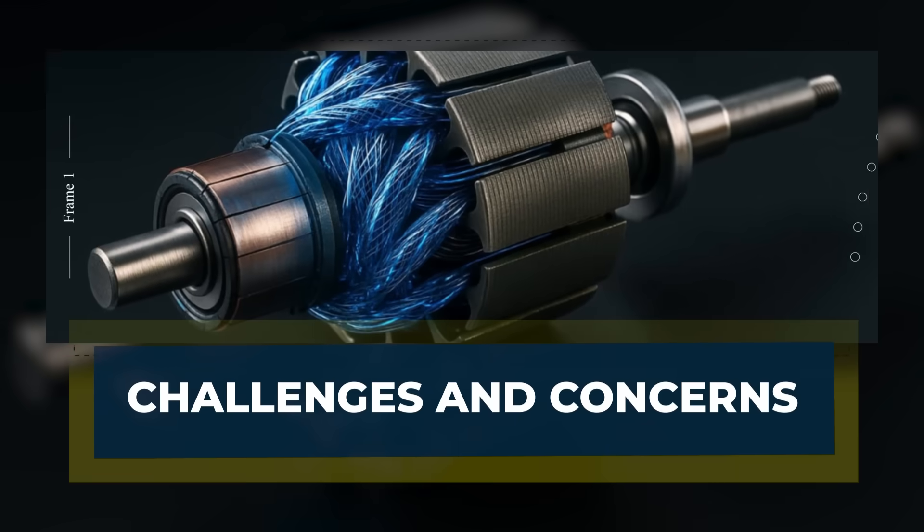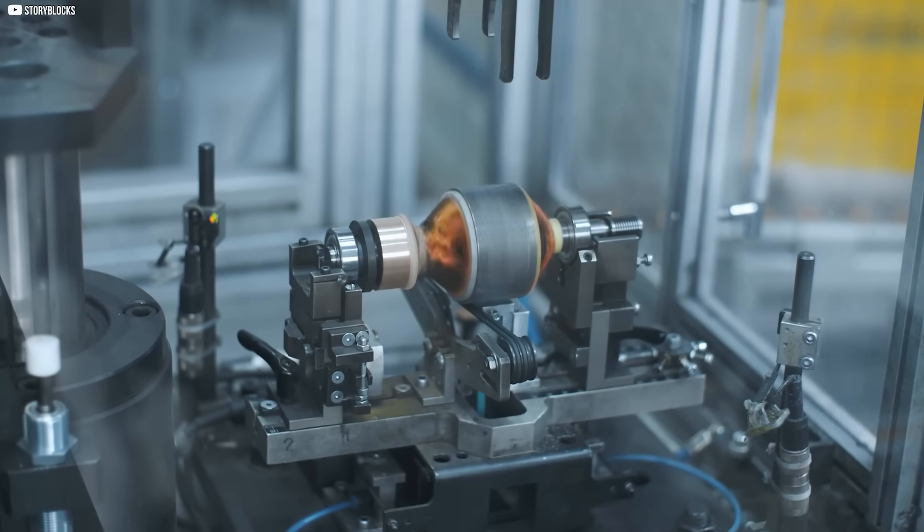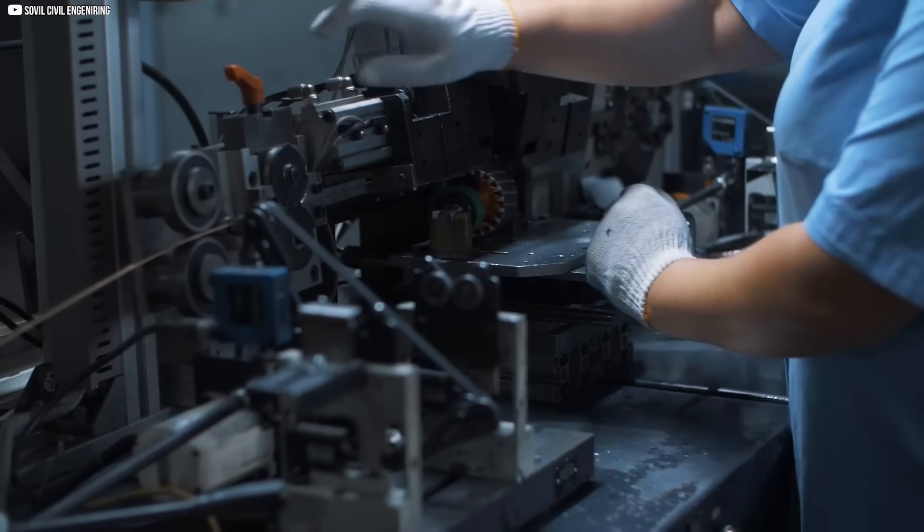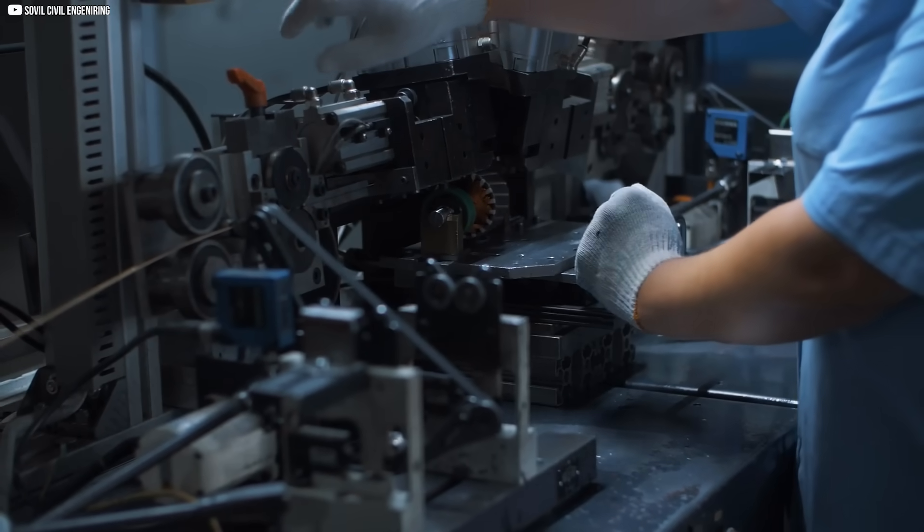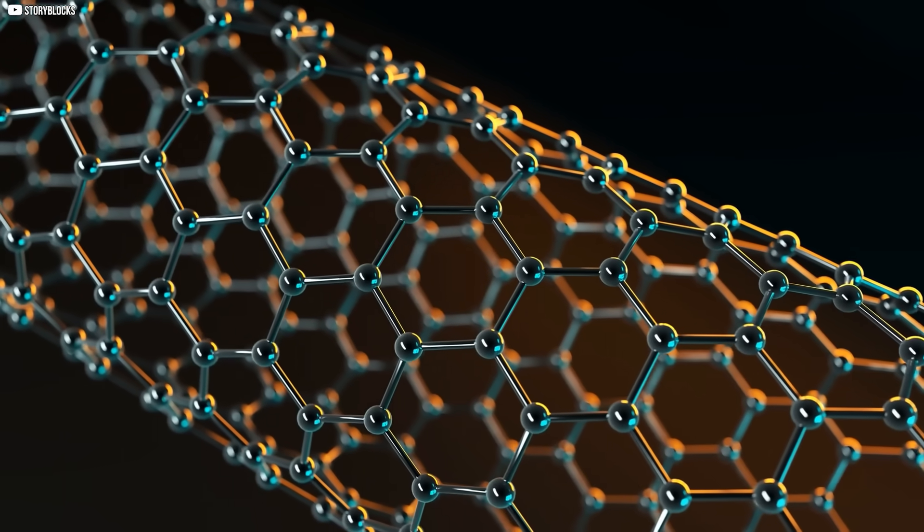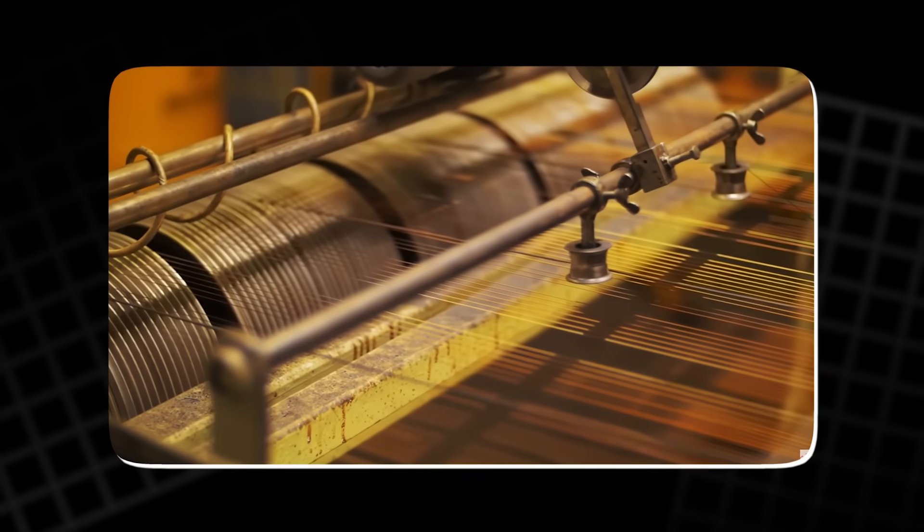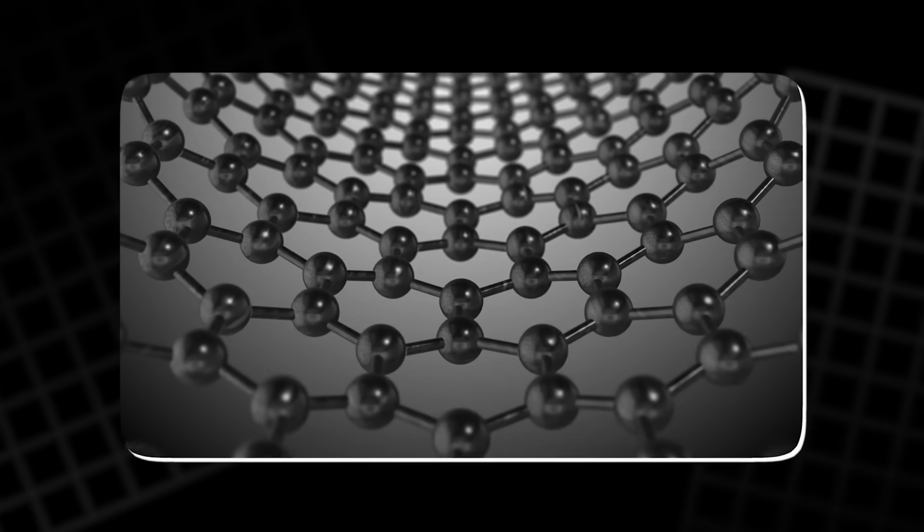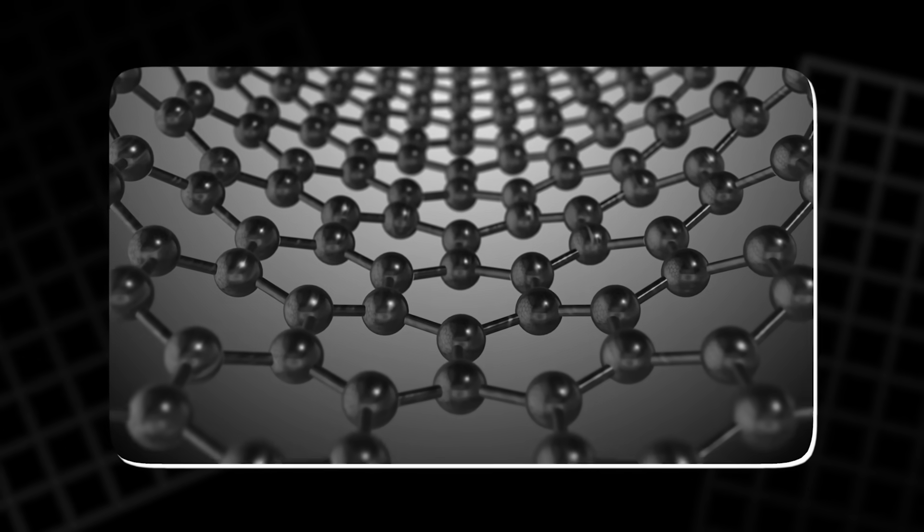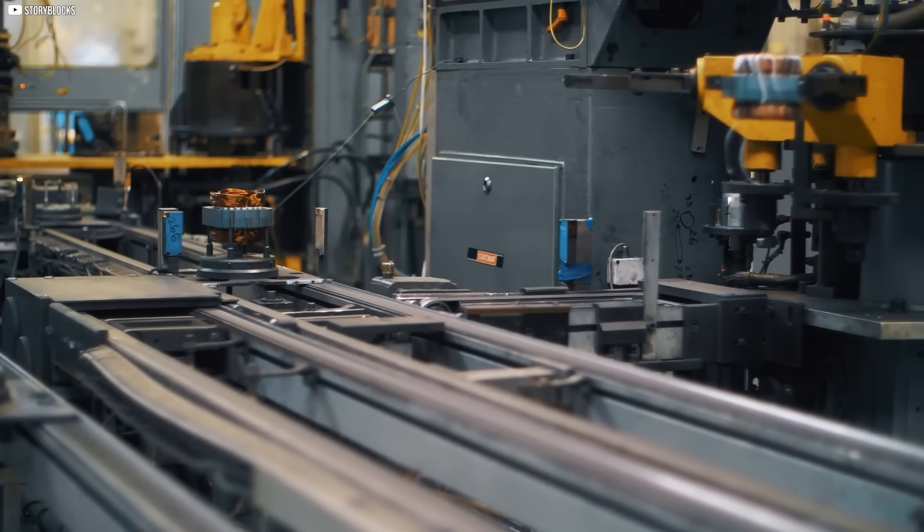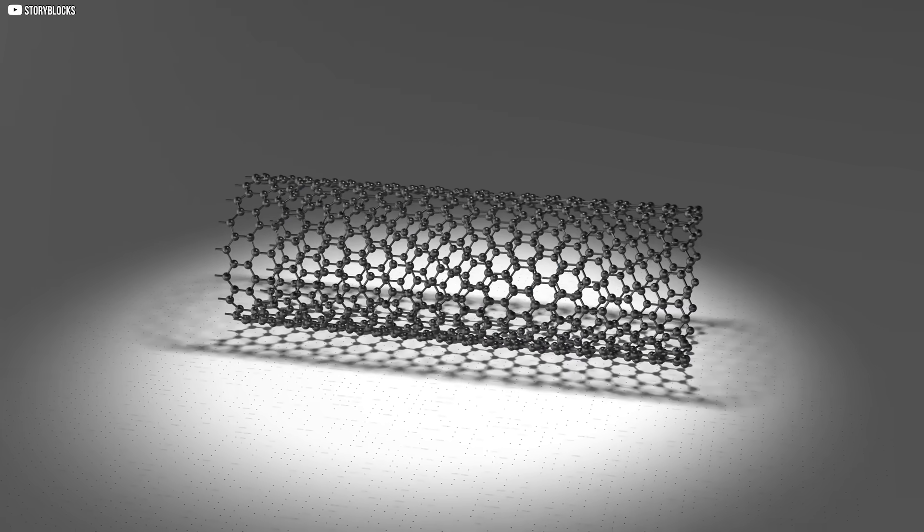Challenges and concerns. But no breakthrough comes without problems, and this one is no exception. The first hurdle is production. Making carbon nanotubes is still difficult and expensive. Aligning them correctly using liquid crystal processes requires precision tools, controlled environments, and time. It's not something that can be cheaply mass-produced in a factory line, at least not yet.